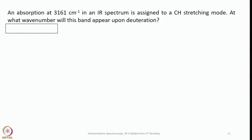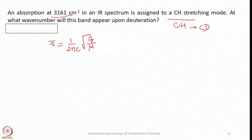Here is another problem: an absorption at 3161 cm⁻¹ in an IR spectrum is assigned to the CH stretching mode. At what wavenumber will this band appear upon deuteration? So if we replace CH with CD, what happens to the stretching frequency? We use the relationship ν = (1/2πc)√(f/μ), where f is the force constant and μ is the reduced mass.